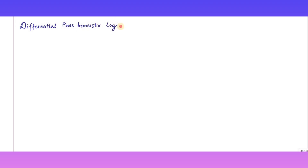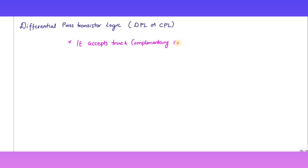In this video, we are going to discuss about Differential Pass-transistor Logic. It is called DPL or CPL — CPL means Complementary Pass-transistor Logic. The basic idea is it will accept true and complementary inputs, and it will produce true and complementary outputs.